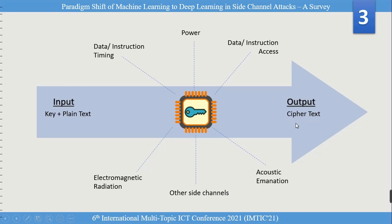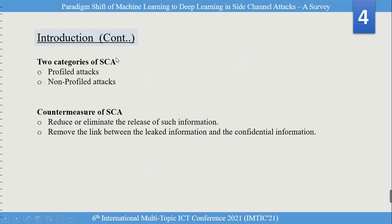There are two categories of side channel attacks: profiled attacks and non-profiled attacks. Profiled attacks are active attacks, and non-profiled attacks are passive attacks. The countermeasures for side channel attacks are: one, to reduce or eliminate the release of such information, and two, to remove the link between the leaked information and the confidential information.